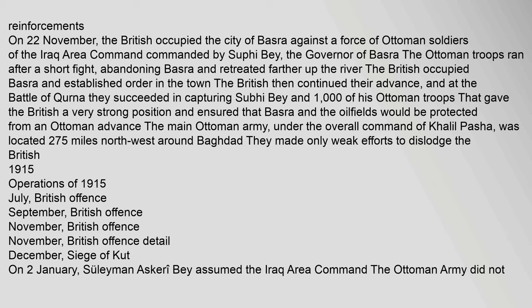On 22 November, the British occupied the city of Basra against Ottoman forces commanded by Sufi Bey, the governor of Basra. The Ottoman troops retreated after a short fight, abandoning Basra farther up the river. At the Battle of Kurna, the British succeeded in capturing Sufi Bey and 1,000 of his troops, giving the British a very strong position and ensuring that Basra and the oilfields would be protected from an Ottoman advance. The main Ottoman army, under the overall command of Khalil Pasha, was located 275 miles northwest around Baghdad and made only weak efforts to dislodge the British.